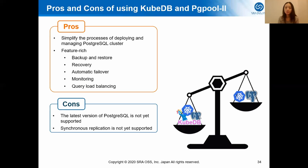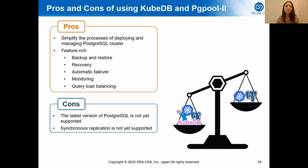I have described how to use KubeDB to deploy a Postgres cluster with query load balancing and how to monitor the Postgres cluster. This solution simplifies the process of deploying and managing a Postgres cluster and has a rich set of features including backup, restore, recovery, automatic failover, monitoring, and query load balancing. However, there are some limitations — KubeDB does not yet support the latest version of Postgres (Postgres 12 is not yet supported), and synchronous replication is not yet supported. We expect KubeDB to add these in the future.